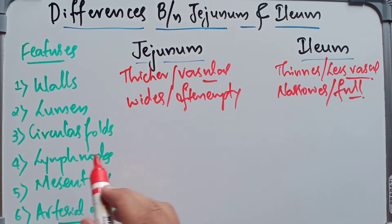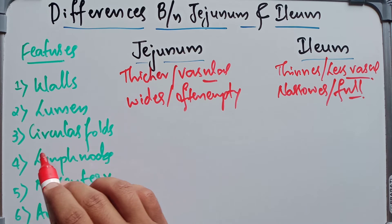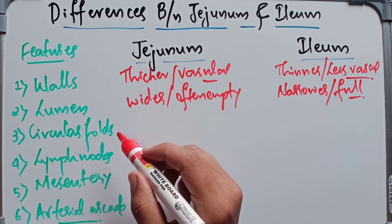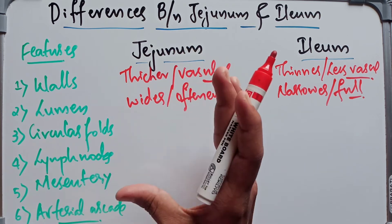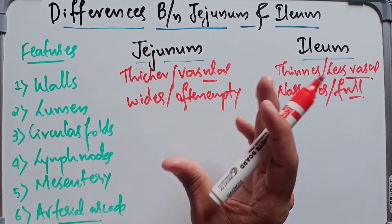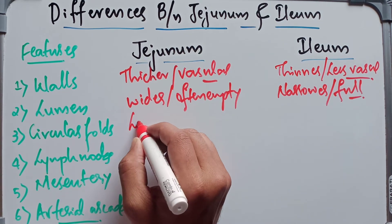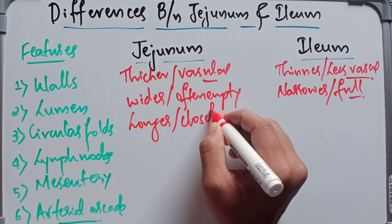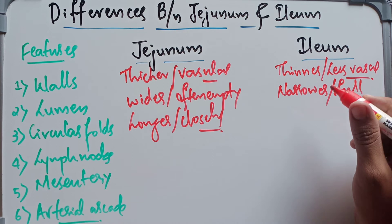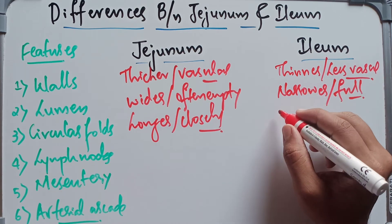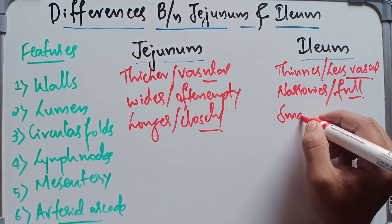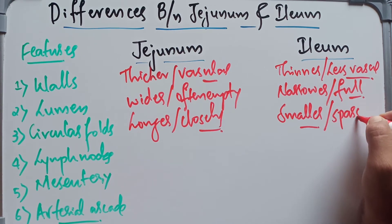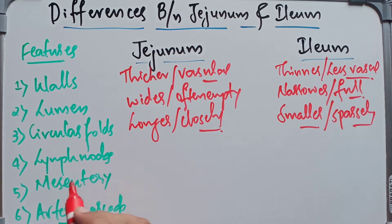Coming to the circular folds — circular folds are also called the valves of Kerckring. In the jejunum these circular folds are longer and closely set. In the ileum they are smaller and sparsely set, meaning they are widely distributed.